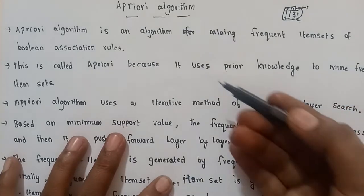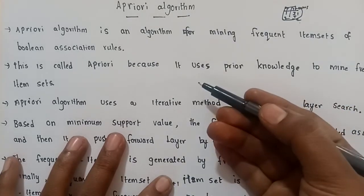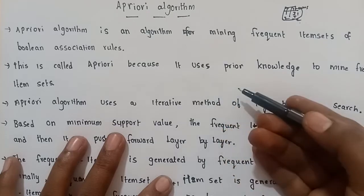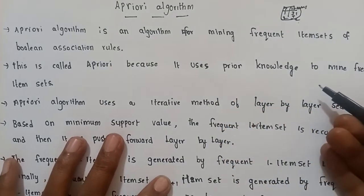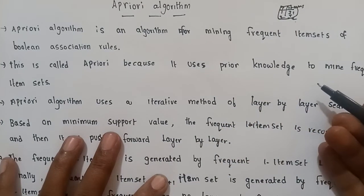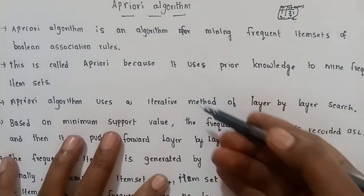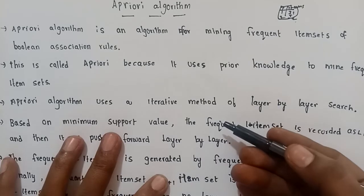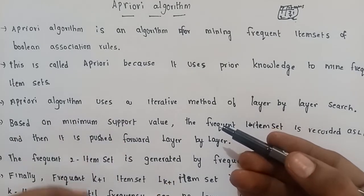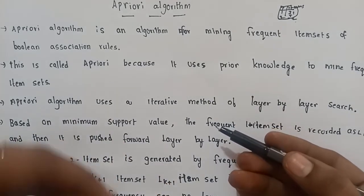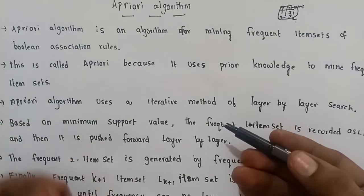This algorithm is called Apriori because it uses prior knowledge to mine frequent item sets.